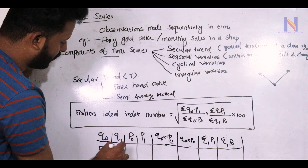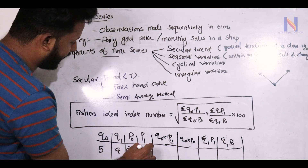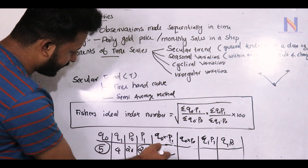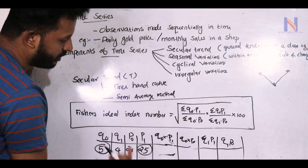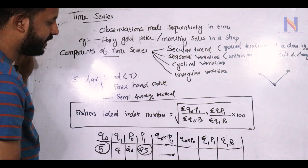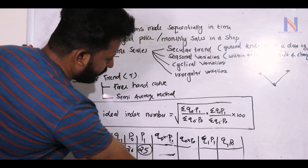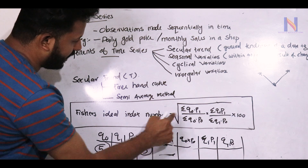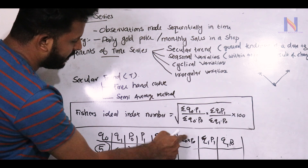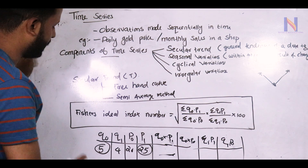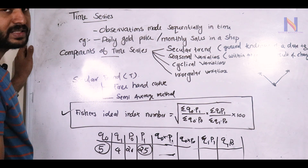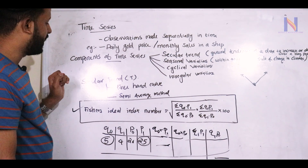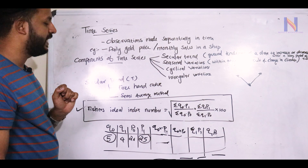For example, the data values are 5, 4, 20, 25. Calculate q0·p1, q0·p0, q1·p1, and q1·p0. Find the summation of each. The summation of q0·p1 divided by the summation of q0·p0 gives part of Fischer's Ideal Index.